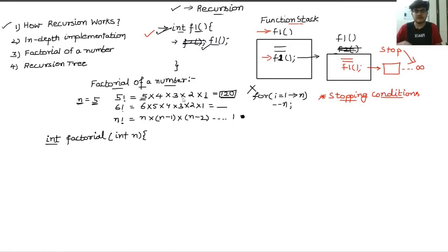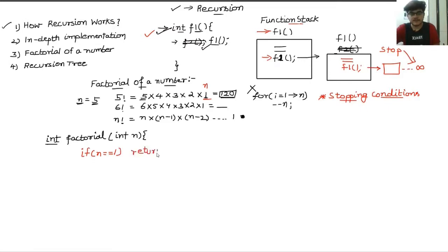In our case — finding the factorial of a number — we can stop the recursion when the value of n has reached 1. So the first task is to write the stopping condition: if n == 1, stop recursion by returning the value. So if n equals 1, we return 1. The return statement is used to return to the previously called stack. In the else case, we will make our recursive call.